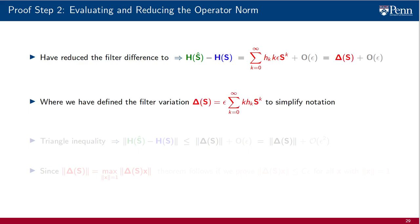To do so, define the filter variation Δ(S) to represent the first summand, which is the one that includes terms that require further processing. Applying the triangle inequality to the equality in the first line, we bound the operator norm of the filter difference by the sum of the operator norm of the filter variation Δ(S) and the operator norm of the matrix O, the one that contains the high order terms.